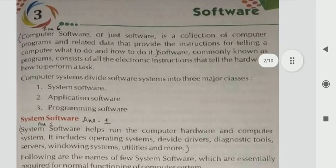What is software? Computer software, or just software, is a collection of computer programs and related data that provide the instructions for telling a computer what to do and how to do it.